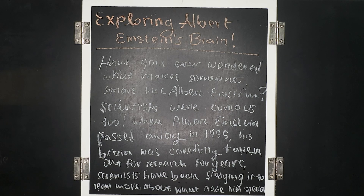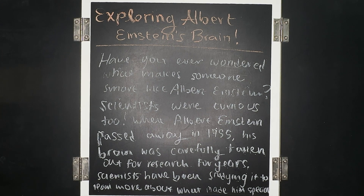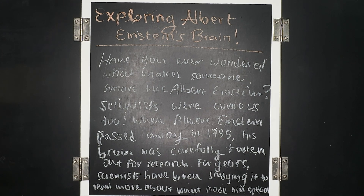When Albert Einstein passed away in 1955, his brain was carefully taken out for research. For years scientists have been studying it to learn more about what made him so special. Based on the topic we would like to collect information on, which we talked about earlier — Albert Einstein's brain — let's underline the sentences that might help us.